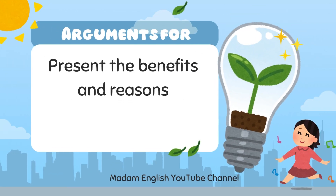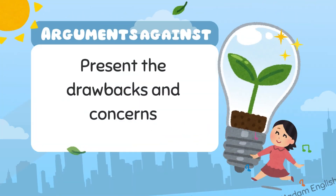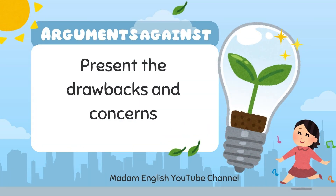Step 2: Presenting the Arguments. You'll need to write separate paragraphs for each side of the argument. Start with the pros, or the arguments in favor of your topic — presenting the benefits and reasons. Next, write about the cons, or the arguments against your topic, presenting the drawbacks and concerns.